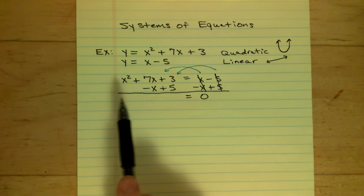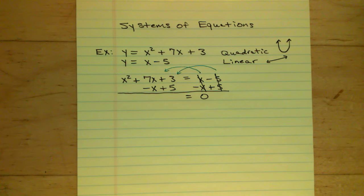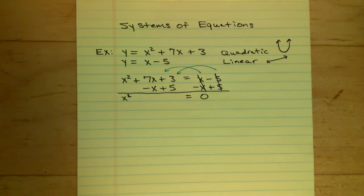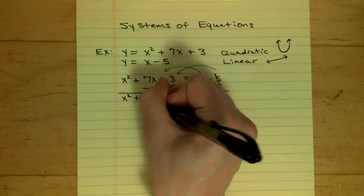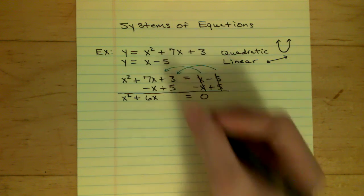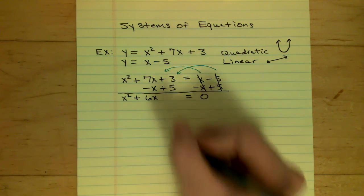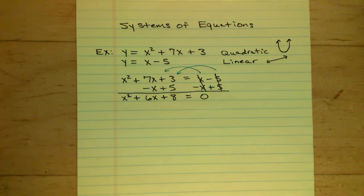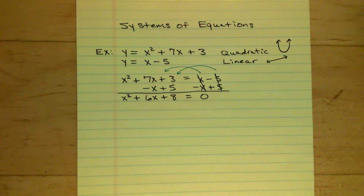So the only thing left on the right side is going to be 0. Now heading over to the left side: x squared brings straight down, 7x minus x gives me 6x, and 3 plus 5 gives me 8. So I basically have x squared plus 6x plus 8 equals 0.